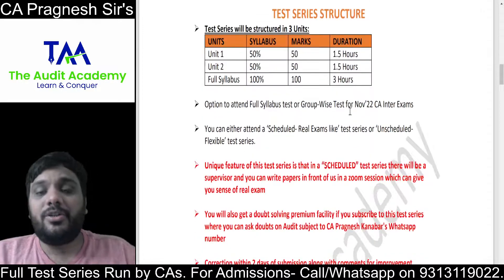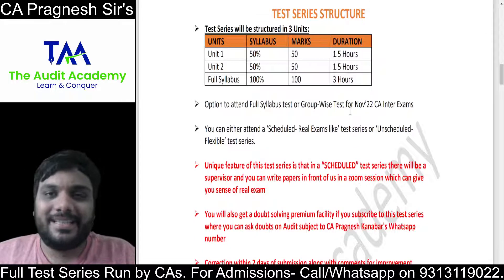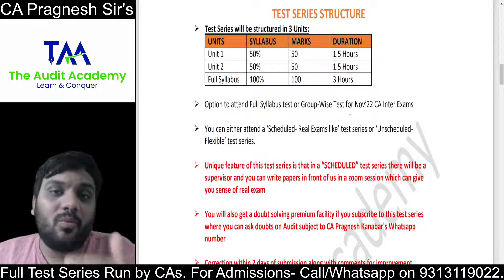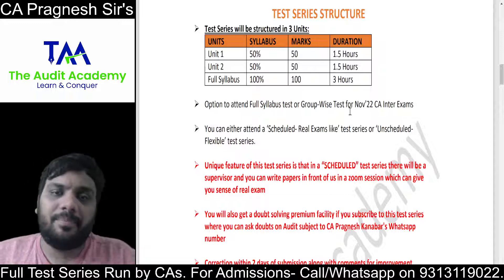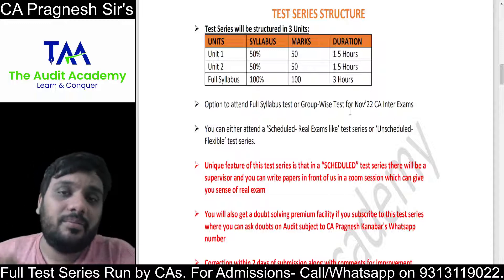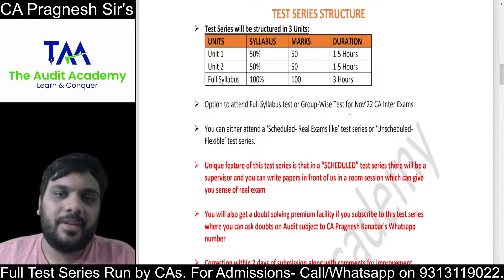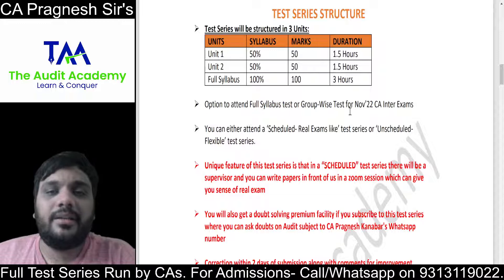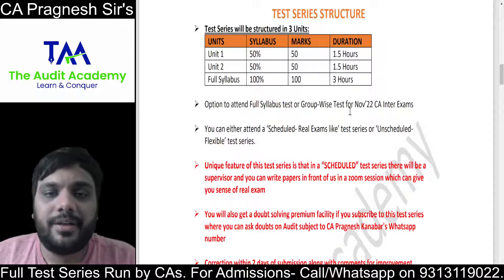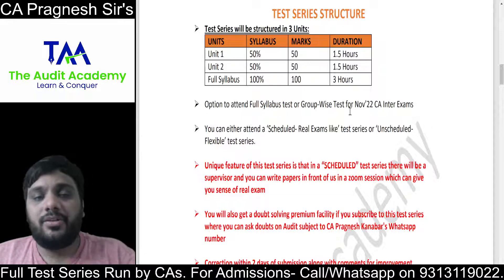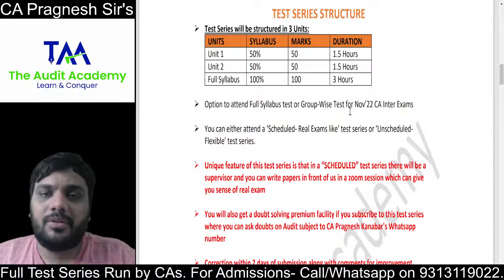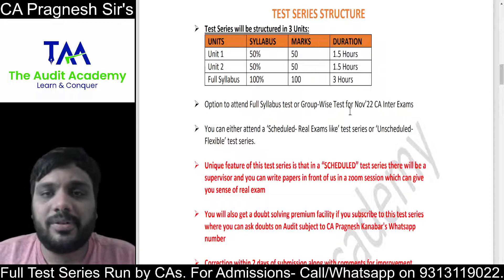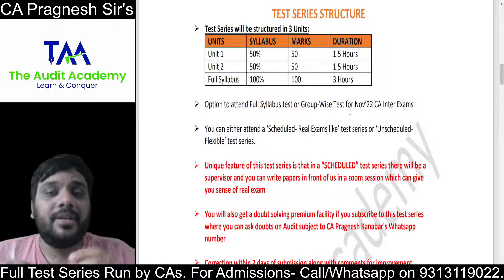Students, there will be two unit-wise tests and one prelim paper for each subject. So with eight subjects in CA Inter November 2022, and two unit-wise tests plus one prelim paper per subject, you can understand that you will be writing around 24 papers in total.